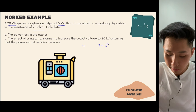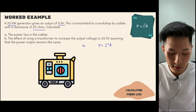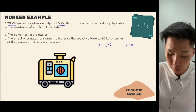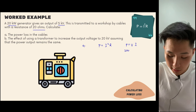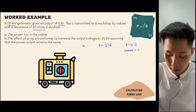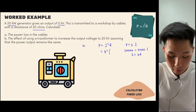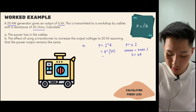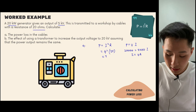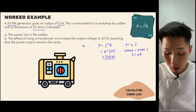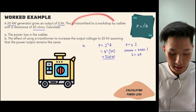Because we are using P = I²R, we first need to find the current. Using P = VI: 20,000 = 5,000 × I, so I = 4 amperes. Now we can calculate the power loss: P = 4² × 20 = 16 × 20 = 320 watts. That's the power loss of the cable using this circuit.